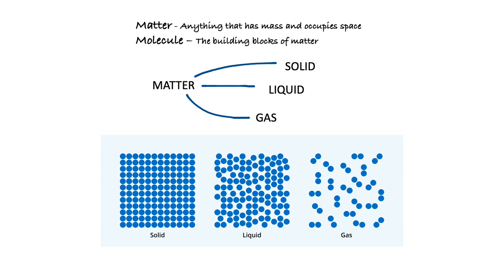Gases are the form of matter where there is a lot of space between the molecules, so the molecules can move around easily. Examples include air and the gas in a cooking cylinder. Now let's get to the main part of the chapter.